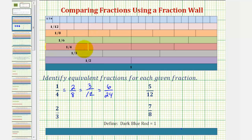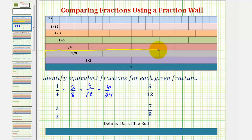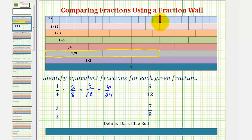Let's take a look at our second example: two-thirds. To model two-thirds using our rods, we'll have to use two rods of length one-third. So all the equivalent fractions would be trains of different rods that have the same length as two-thirds.